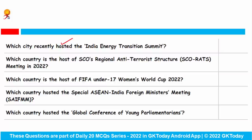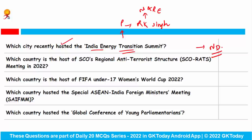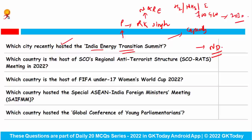Which city recently hosted the India Energy Transition Summit? Minister for Power and New and Renewable Energy, R.K. Singh, addressed this summit in New Delhi. He stated that India is leading in energy transition and is the fastest-growing renewable energy capacity in the world. He affirmed that India can achieve 700 Gigawatts of renewable energy by 2030 if the vision of green hydrogen, green ammonia, and electric vehicles is realized.